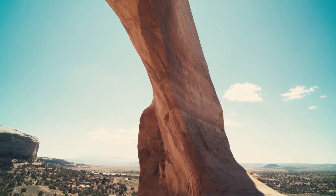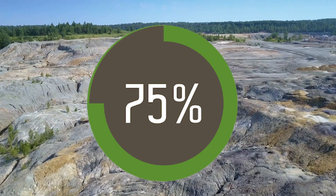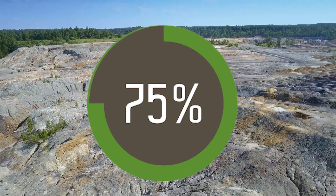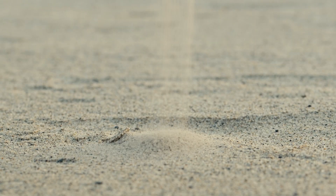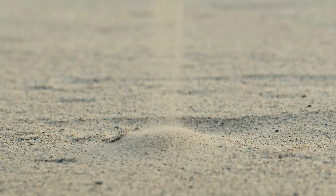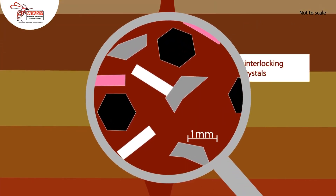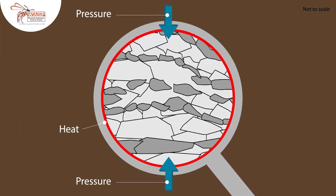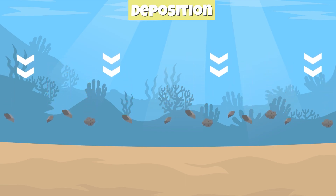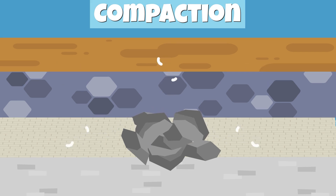And trust me, by the end of this video, you'll be spotting them everywhere. Sedimentary rocks make up about 75% of the Earth's surface. These rocks are formed by particles, or sediments, that have been broken down from pre-existing rocks. Unlike igneous rocks that form from molten magma, or metamorphic rocks that are changed by heat and pressure, sedimentary rocks are all about layering and compacting over time. So let's break down that process.